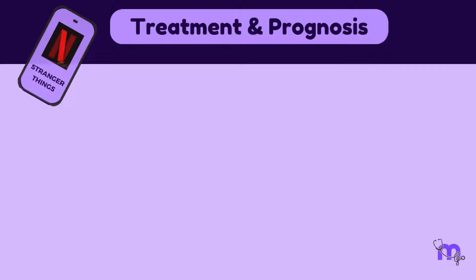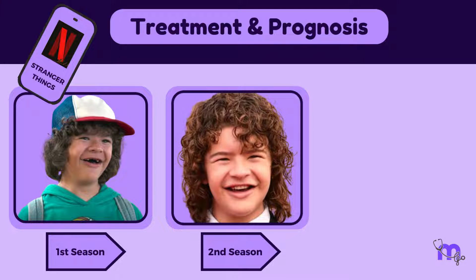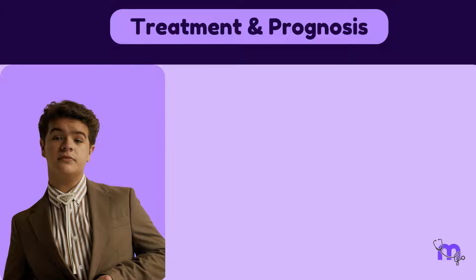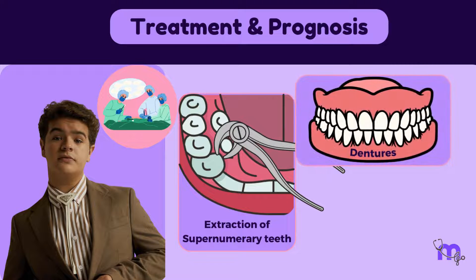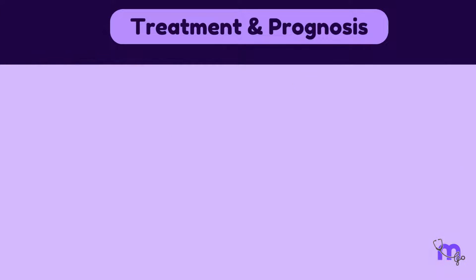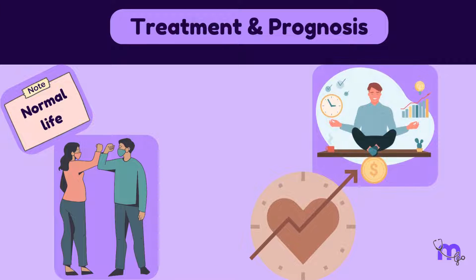Coming back to our Stranger Things hero, in the first season he has a very visible gap with teeth missing. In the second season he wears dentures, and in the subsequent seasons he appears to be wearing braces. This mirrors the real-life experience of the actor, who has the condition and had to undergo several surgeries to remove his supernumerary teeth, wear dentures, and then use appliances to extrude his permanent teeth. It is important to note that individuals with this condition can lead a normal life in terms of life expectancy with proper management and support.